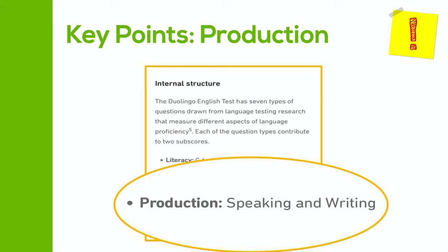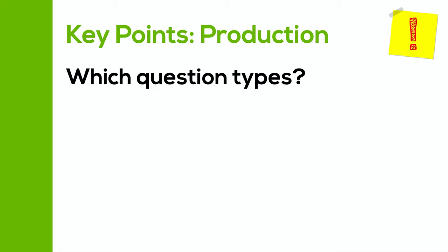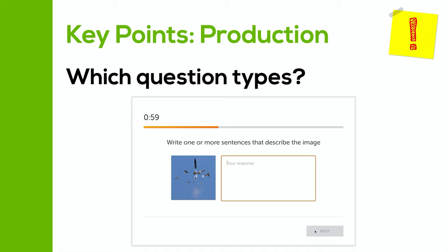Let's start with the writing questions. The first one is describe a picture, and it looks like this on the test. For this, you have 60 seconds to write at least one sentence describing the image. In total, you'll have this question type three times during the test. I made a video showing you how to answer this question type really well — there is a link in the description below.